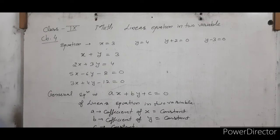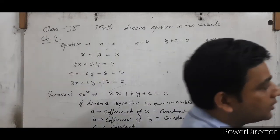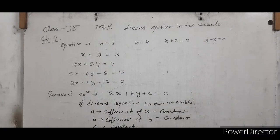So, AX plus BY plus C equals to 0 — where A is the coefficient of X, B is the coefficient of Y, and C is the constant term — is called the general equation of a linear equation in 2 variables. On this basis, we have Exercise 4.1, where we prepare linear equations in 2 variables and convert equations to standard or general form.